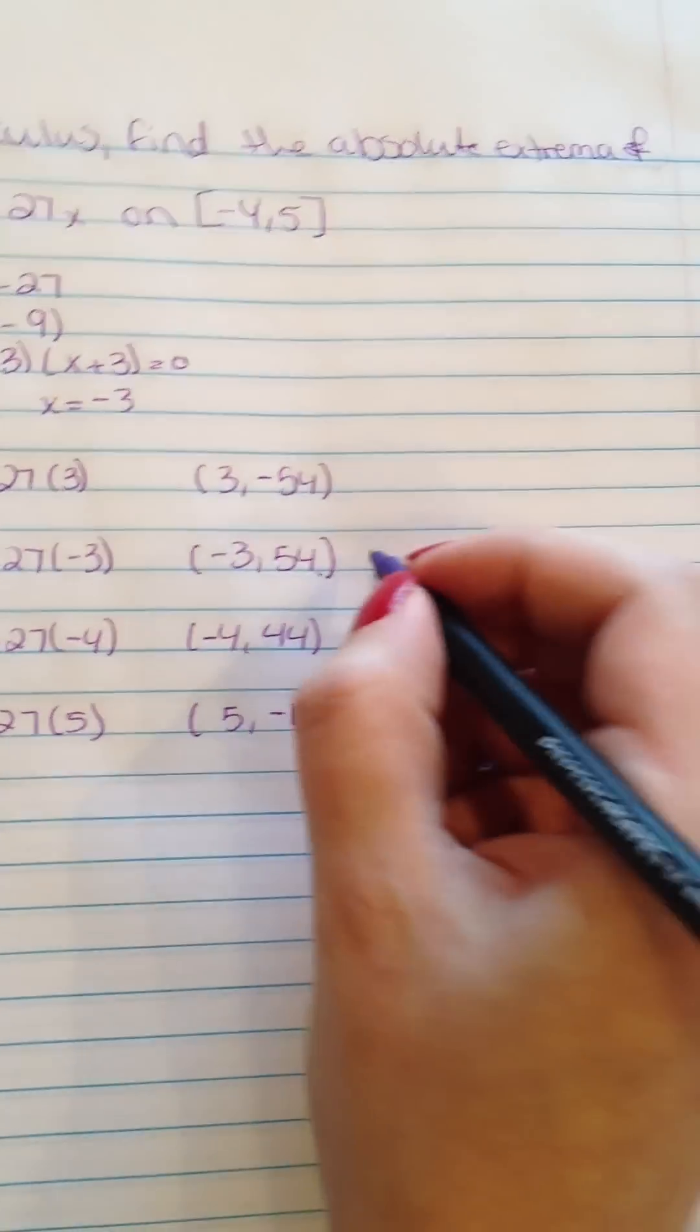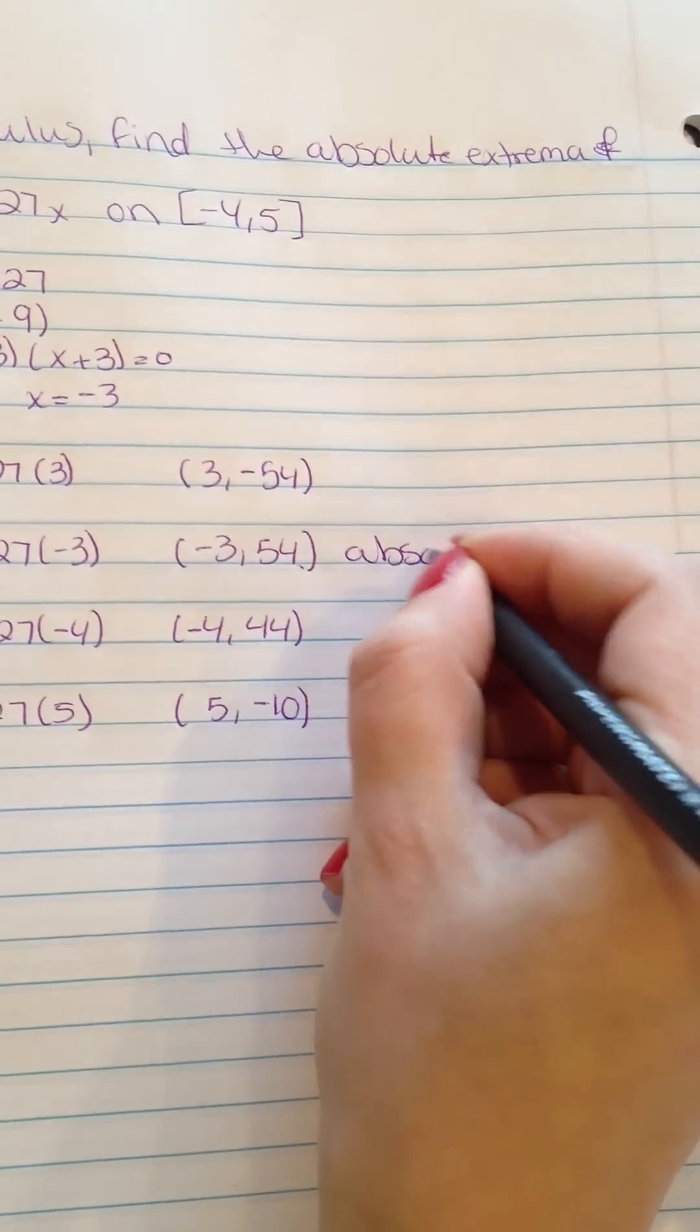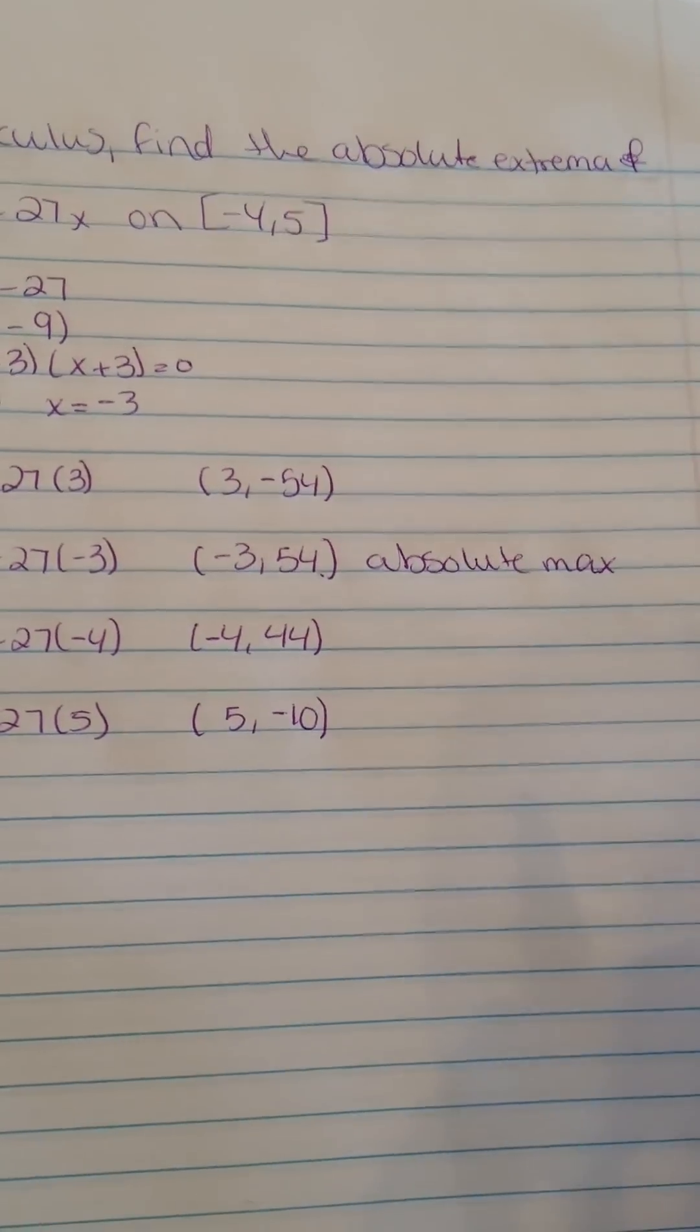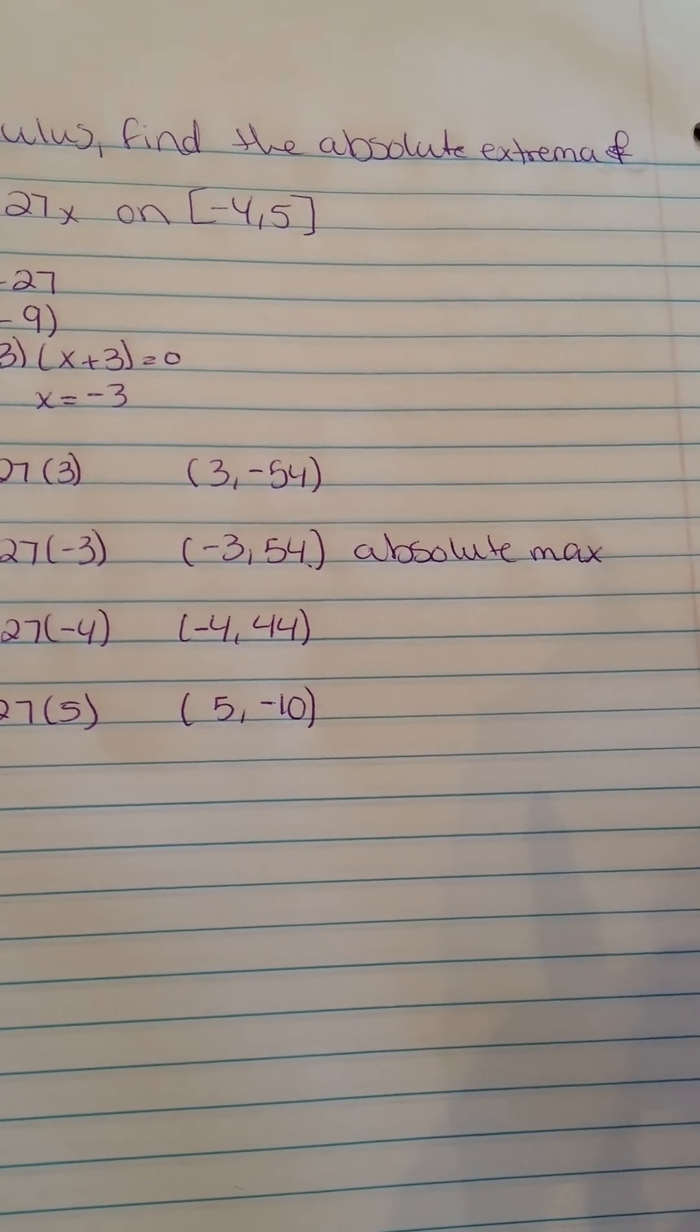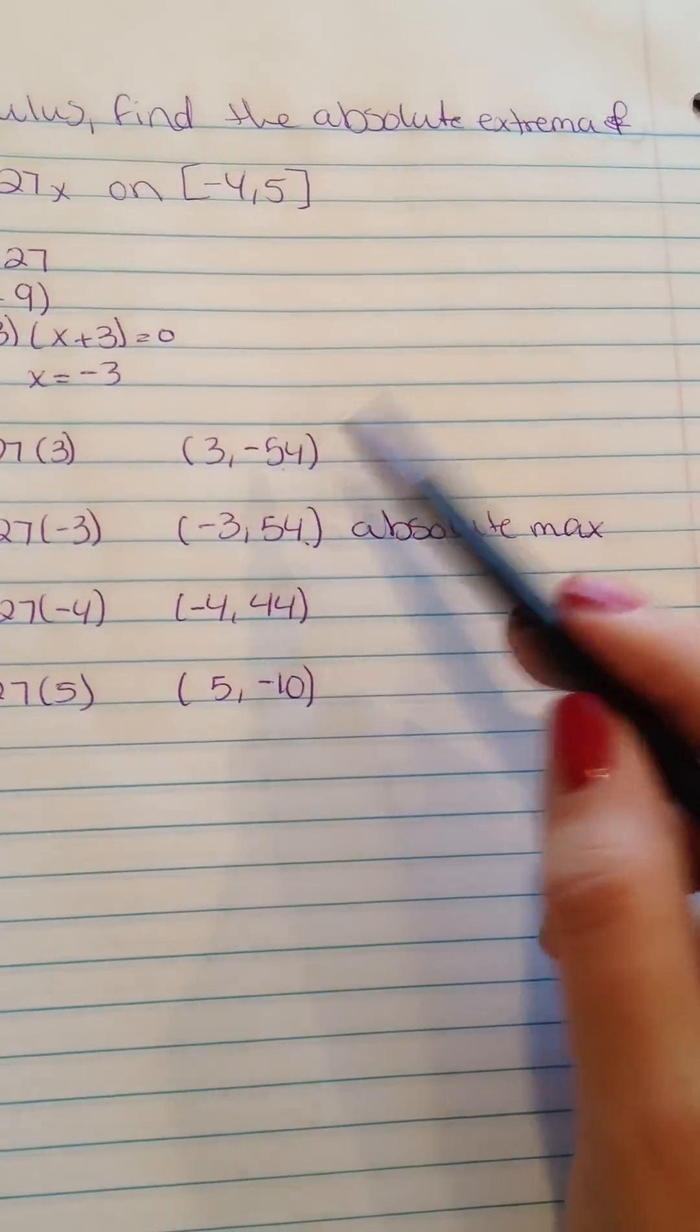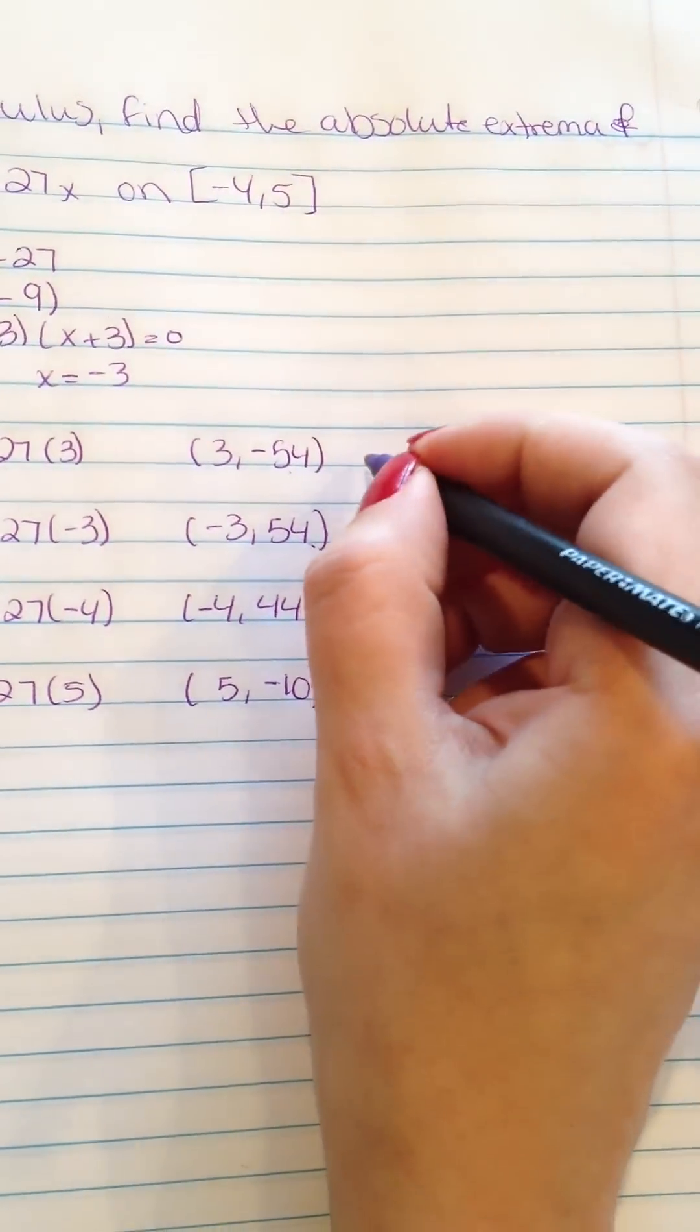So which one would go the highest? -3 and 54 would be the highest, so would be the absolute max. And then which one would go lowest? It's 3, -54, so it's the absolute min.